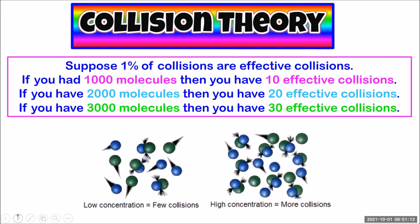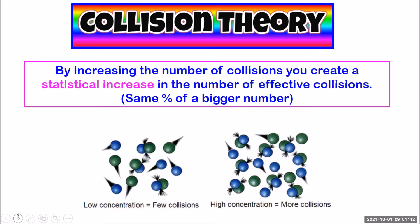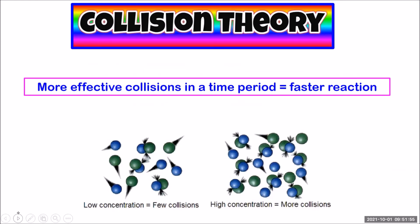Suppose there's a fairly constant 1% of collisions that are effective and actually result in a chemical reaction. So if you had 1,000 molecules, then you're going to have 10 effective collisions. If you have 2,000 molecules, then you're going to have 20 effective collisions. If you have 3,000 molecules, then you're going to have 30 effective collisions, and so on. Having more collisions statistically increases the number of effective collisions — you're just taking the same percentage of a bigger number. If you have more effective collisions per second, then you're going to have a higher rate of reaction. So that's how increasing the concentration increases the rate of reaction.